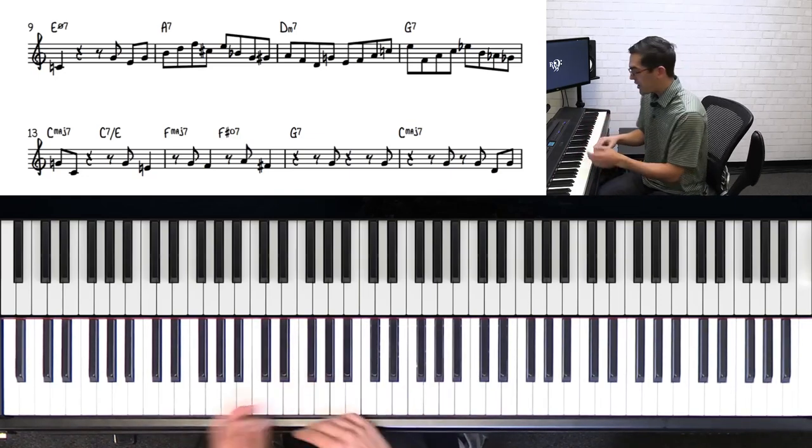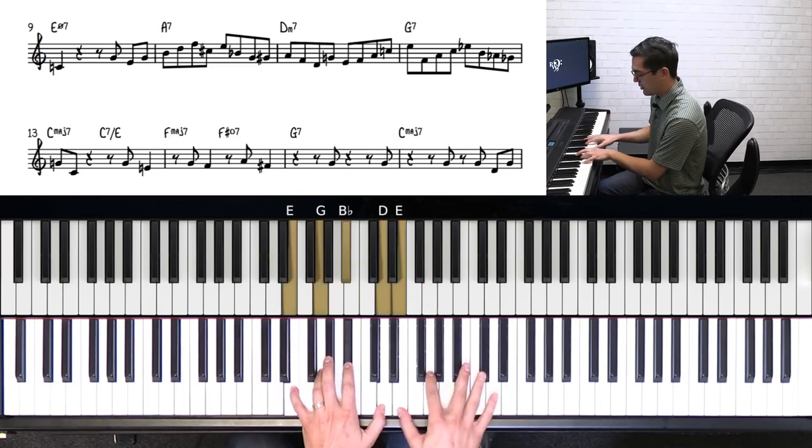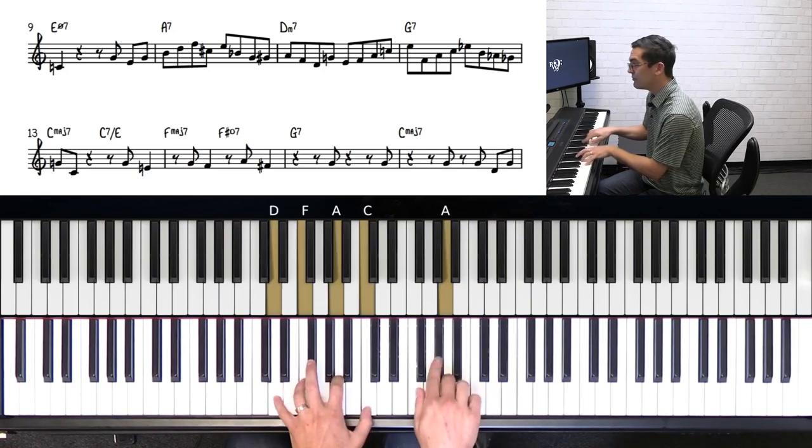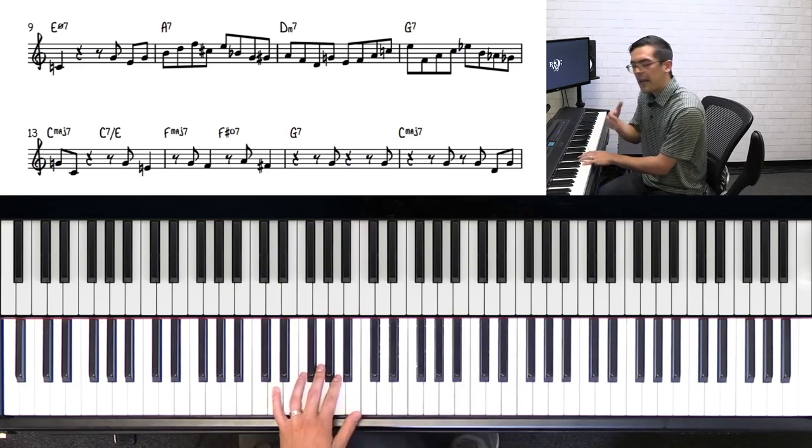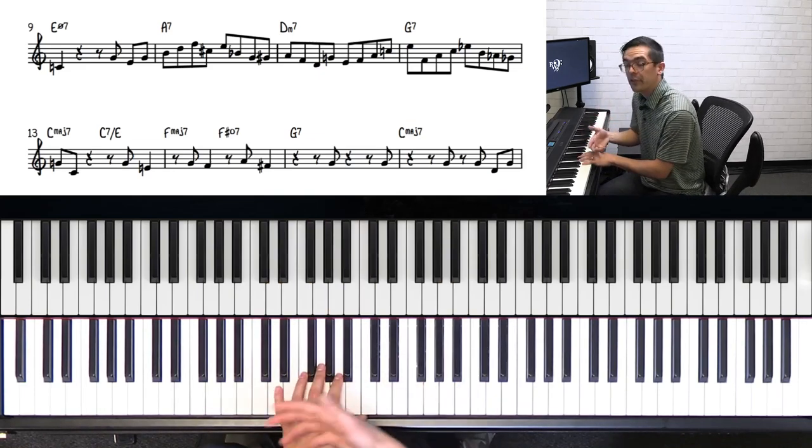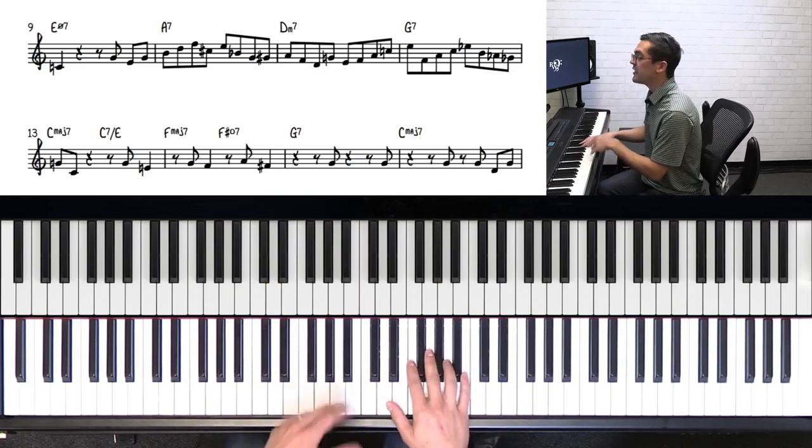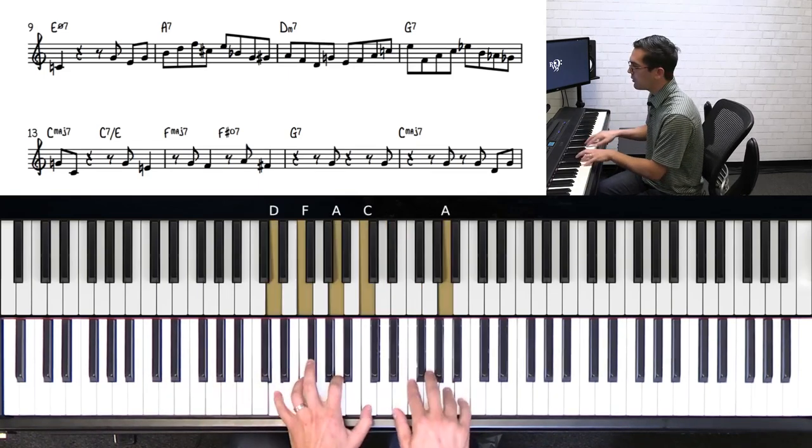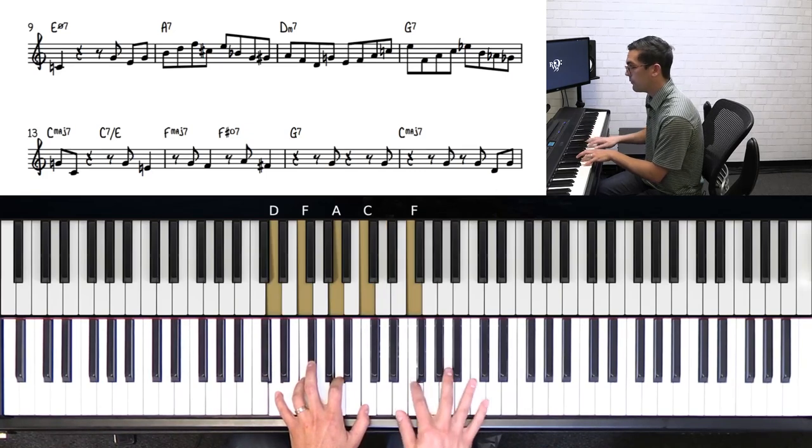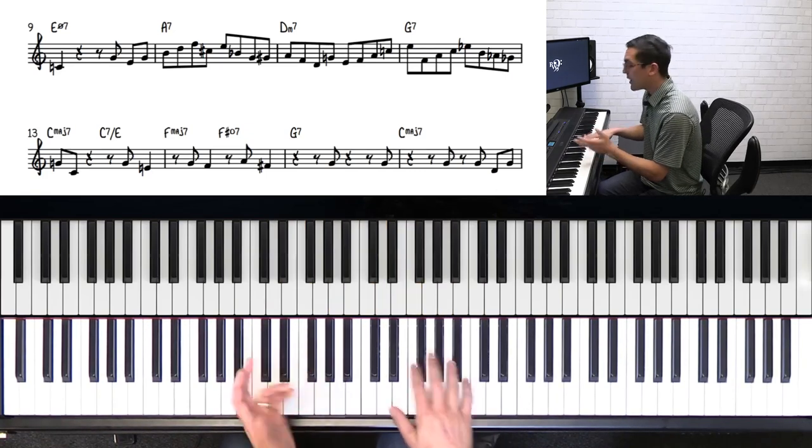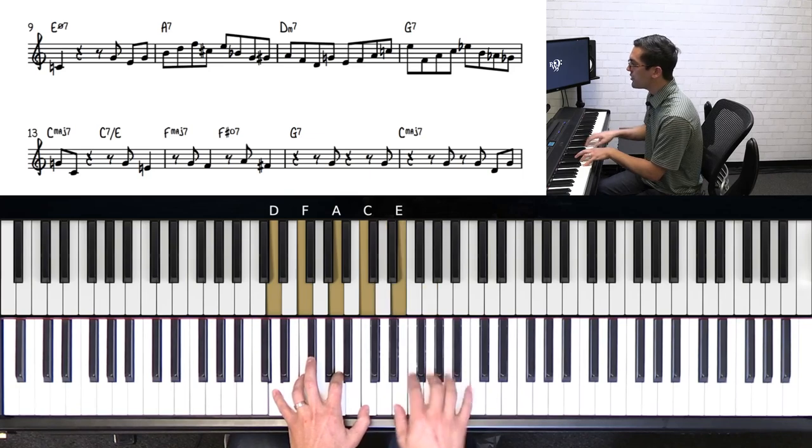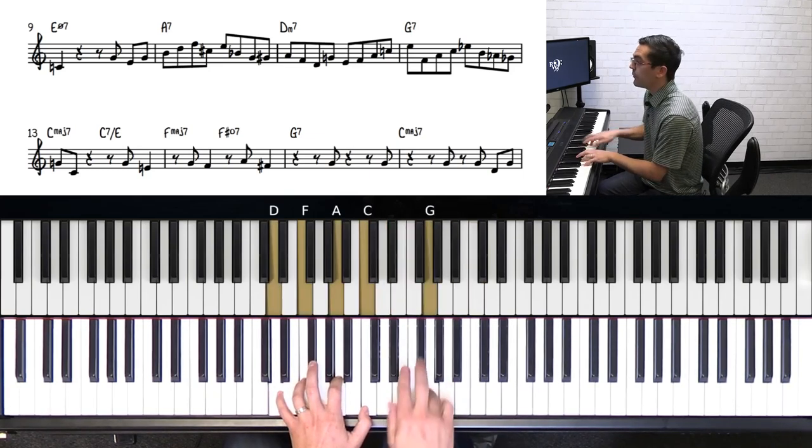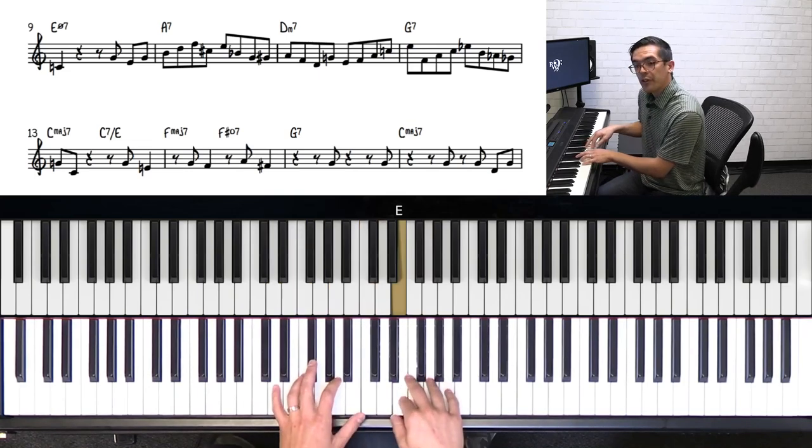So these are all basically thirds that he's playing, just arpeggios. And that G sharp there is just a passing note to get to A, which is the fifth of D minor. Then he continues that same arpeggio technique, just 5, 3, 1.